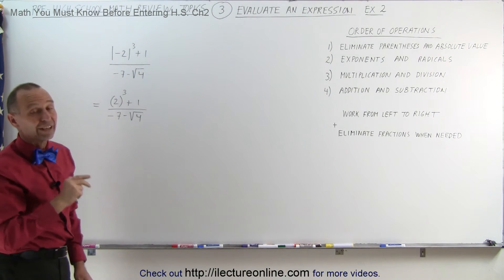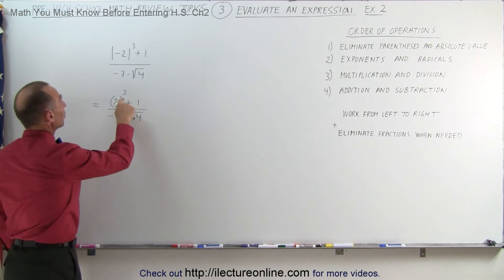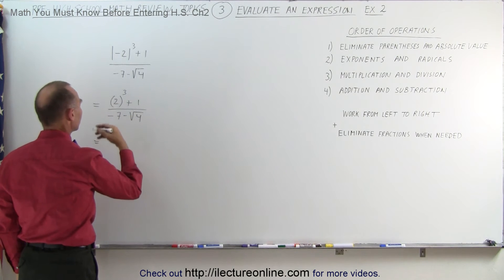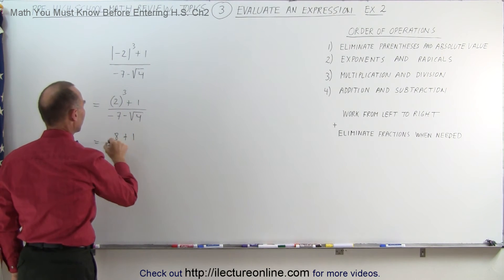Next, we want to get rid of exponents and radicals. We have an exponent in the numerator, we have a radical in the denominator. So this can be written as 2 cubed, which is 2 times 2 times 2, which is equal to 8, plus 1, divided by negative 7, minus the square root of 4, that's minus 2.